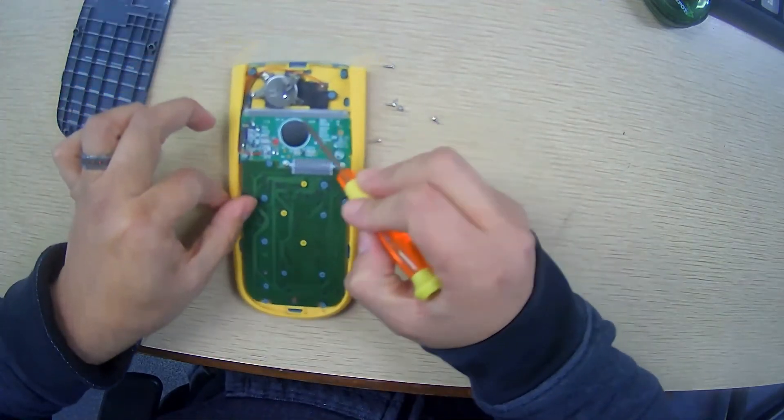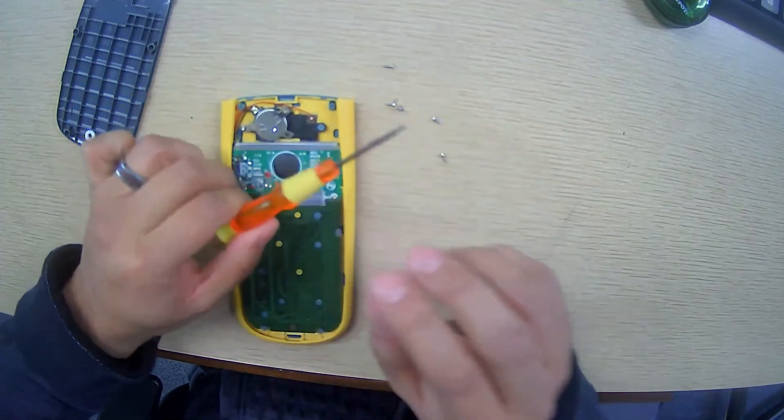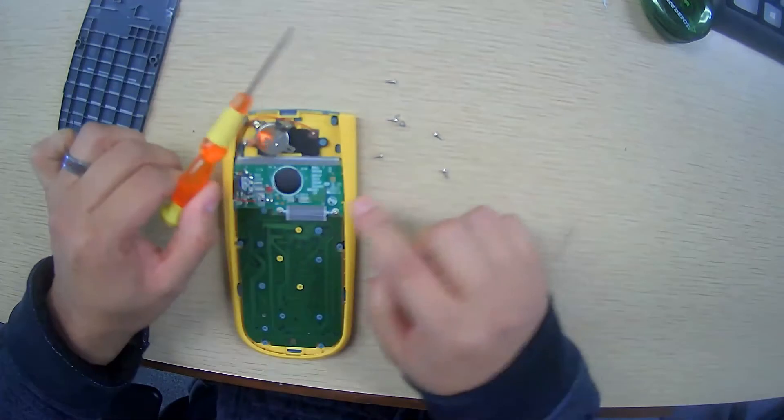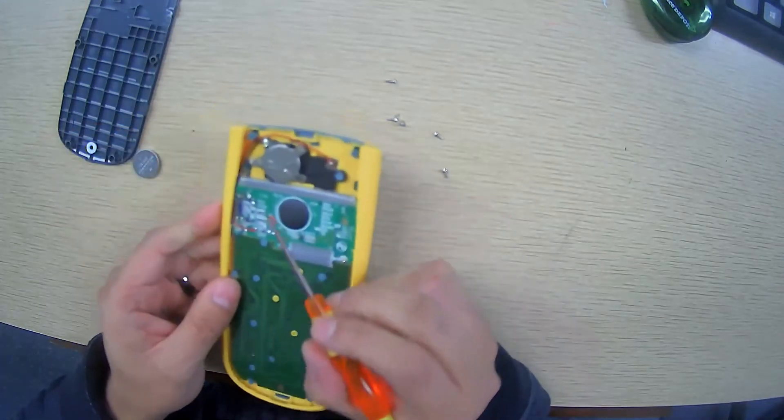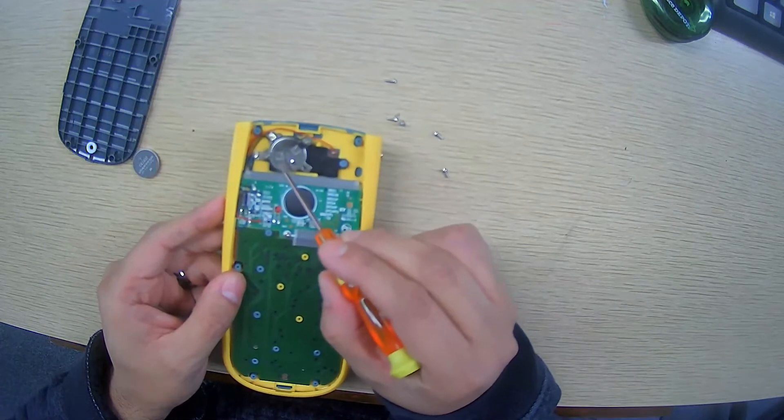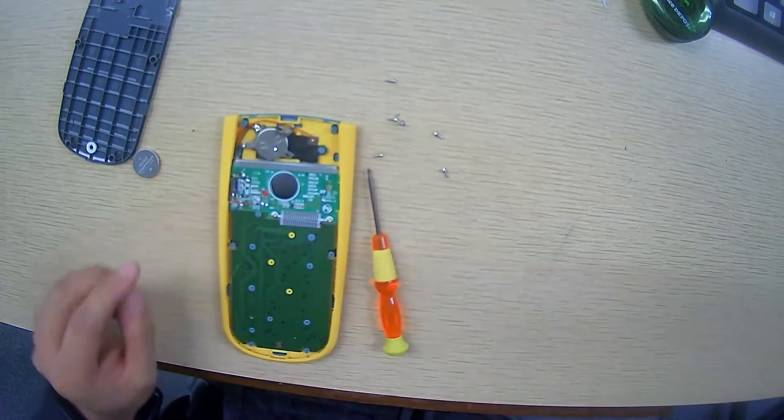And then the battery is located over here. I'm going to try to focus this a little better. So the battery is located over here, and I'm going to take away these two more screws and then take away the battery and replace it. I'll do that right now.